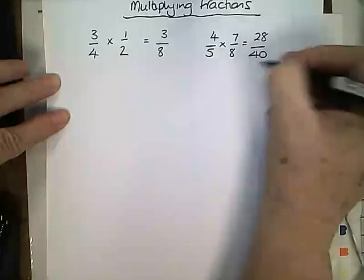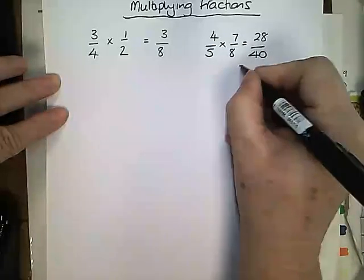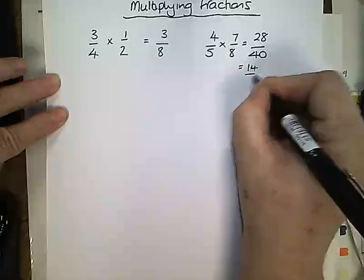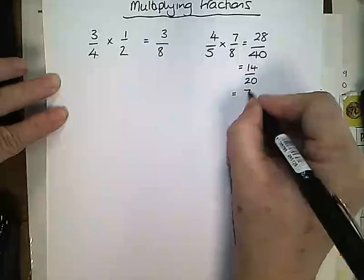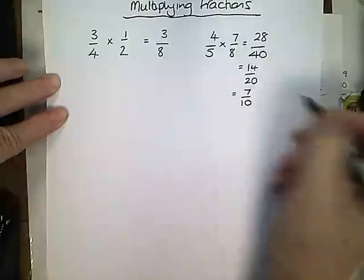Then you might need to cancel down this fraction. They are both even numbers so we can divide by 2. So that's 14 over 20. They are both even numbers so we can divide by 2. So that becomes 7 over 10. And that's your final answer.